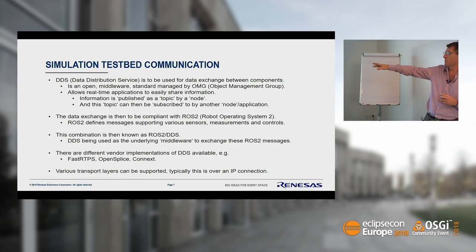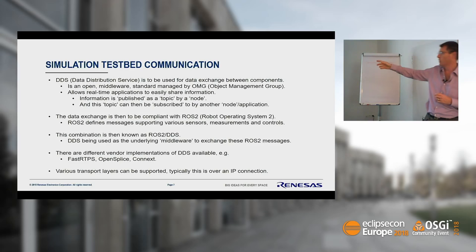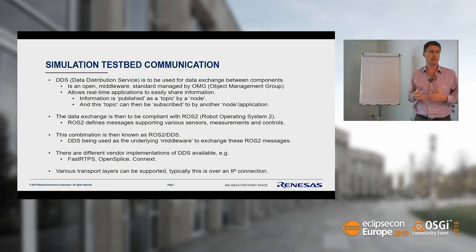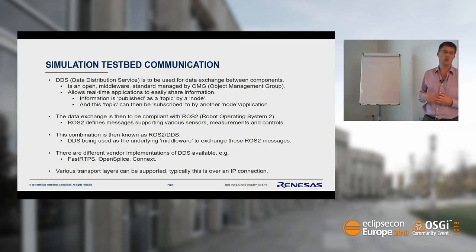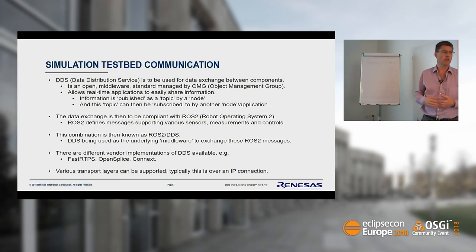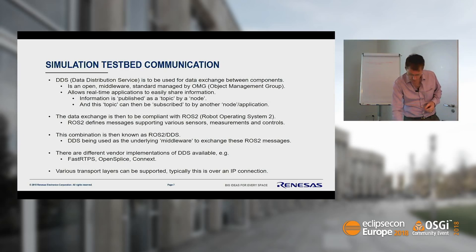DDS vendors include Fast RTPS and OpenSplice, both readily supported in ROS2, which you can download and install on a PC. The transport layer DDS uses is by default IP-based, but you can write your own — for example, shared memory for local nodes to be more efficient. In our case we're using UDP/IP.